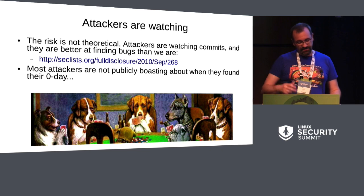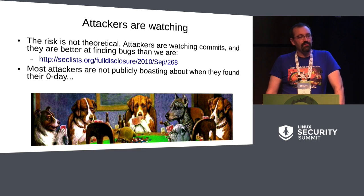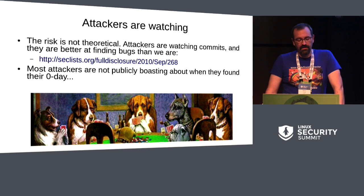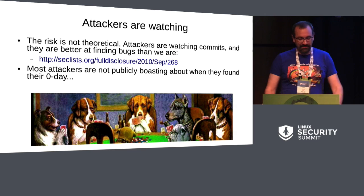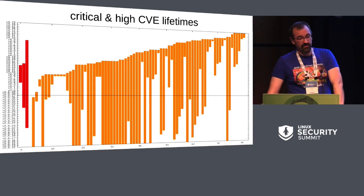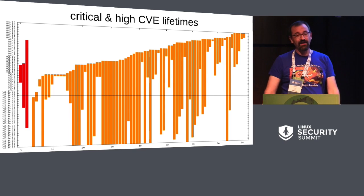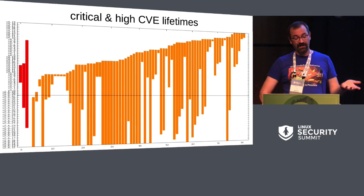People ask: no one saw these bugs until right before they got fixed? That doesn't seem to be true. People whose job it is to find these flaws and exploit them tend to find them well before the upstream community. We have proof of this — occasionally an attacker will boast about having found it long ago. Most attackers are not publicly talking about their exploits. There is some other thing not yet on this graph, like Dirty COW was, and I'd like to help us defend against them.